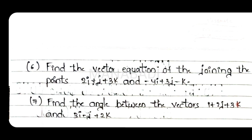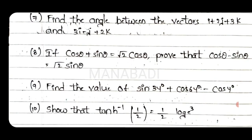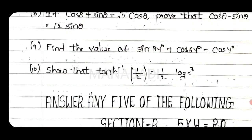The sixth question: find the vector equation joining the points 2i plus j plus 3k and minus 4i plus 3j minus k. Seventh question: find the angle between the vectors i plus 2j plus 3k and 3i minus j plus 2k. Eighth question: if cos θ plus sin θ equals under root 2 cos θ, prove that cos θ minus sin θ equals under root 2 sin θ. Ninth question: find the value of sin 34 plus cos 64 minus cos 4. Tenth question: show that tanh inverse of half equals half log 3.